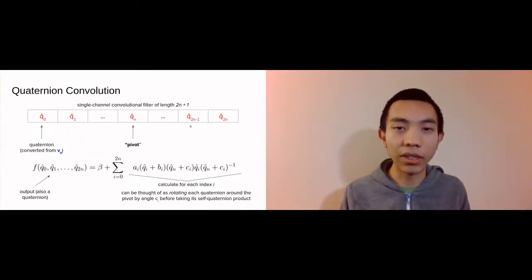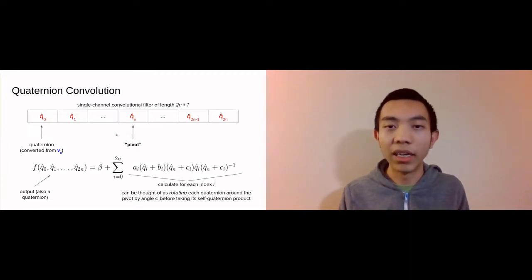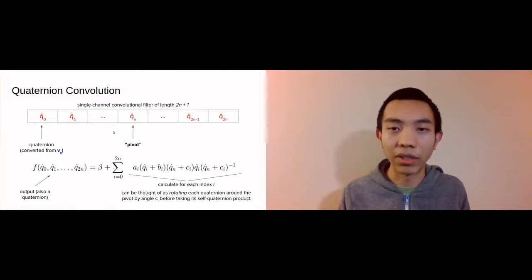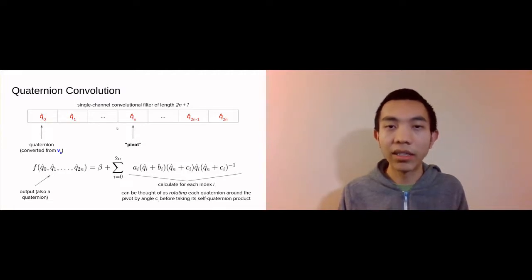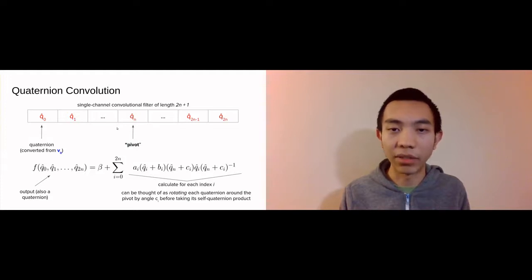The details of our kernel are shown here. I'll just describe the high-level details. We have an input window of vectors viewed as quaternions. The quaternion in the middle is called the pivot. For every other quaternion, we learn to rotate it around the pivot by a specific angle, and then multiply it with the original unrotated quaternion in that index. This operation of quaternion multiplication can be thought of as having similar properties as the vector cross product. The final output of the kernel is then a linear combination of all of these products.